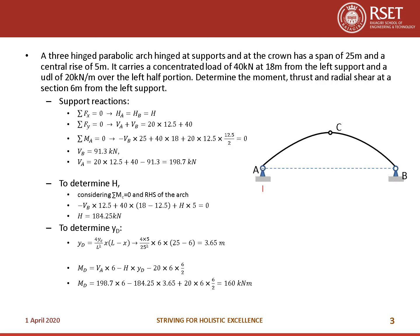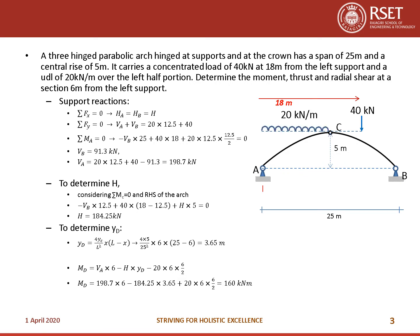Let us do one problem. A three-hinged arch, hinged at supports and at the crown, has a span of 25 meters and a central rise of 5 meters. It carries a concentrated load of 40 kN at a distance of 18 meters from the left support and a UDL of 20 kN/m over the left half. Determine the moment, thrust, and radial shear at a section 6 meters from the left support. There will be vertical and horizontal reactions at the supports; horizontal reactions are equal and opposite as there are no other horizontal forces.